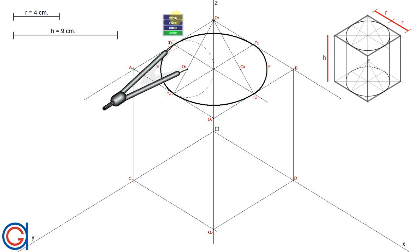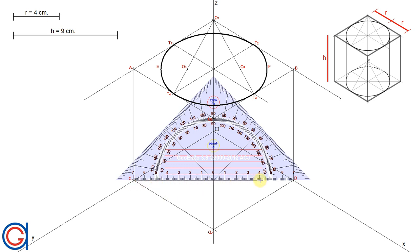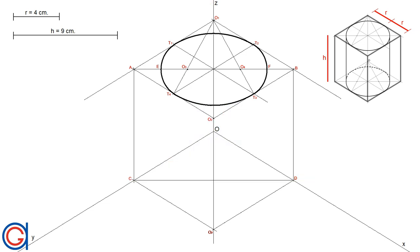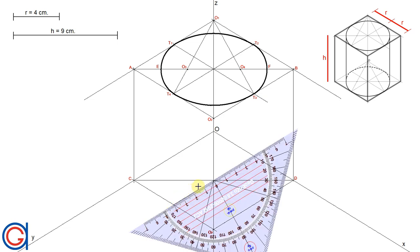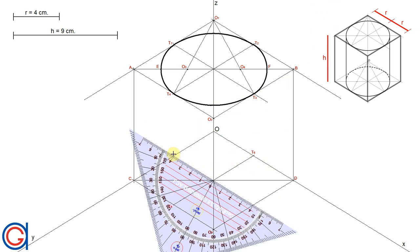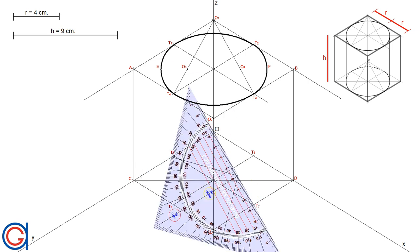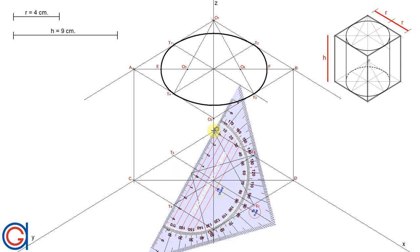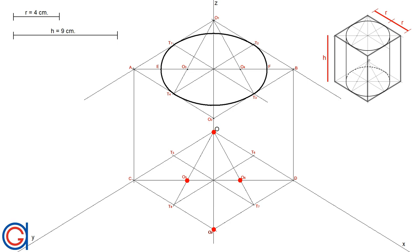Now that we have obtained the top part of the cylinder, we are going to repeat the same process on the bottom. We join point c to d, then draw a parallel line through the center point parallel to the y-axis obtaining points t6 and t8, and another one parallel to the x-axis obtaining points t5 and t7. Joining the origin o to t7 and the origin o to t8, we get two new points o5 and o6.